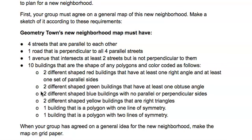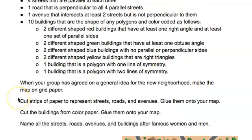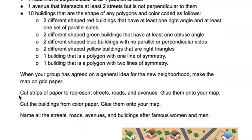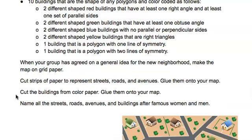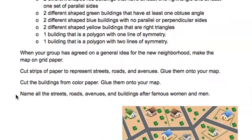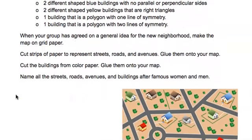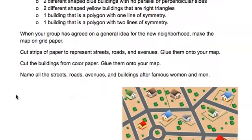When your group has agreed on a general idea for the neighborhood, you are going to take your rough sketch and plan and make the map on grid paper. You can cut out strips of paper to represent the roads and avenues, and then cut out buildings from colored paper and glue them on your map. If you don't have paper, you can just draw directly onto your grid paper.